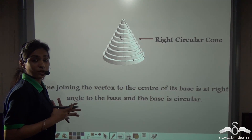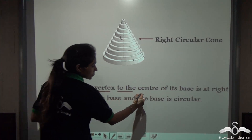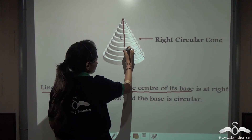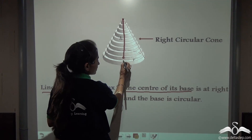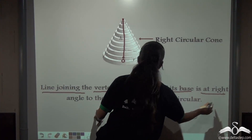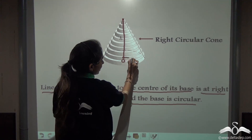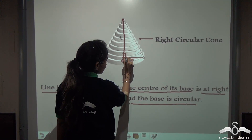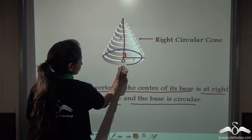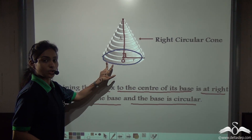So when will a cone be a right circular cone? Remember: when the line joining the vertex to the centre of its base — marked as O — is at a right angle to the base, and the base is circular. It has to be at a right angle to the base, and this base has to be circular. This is when a cone will be a right circular cone.